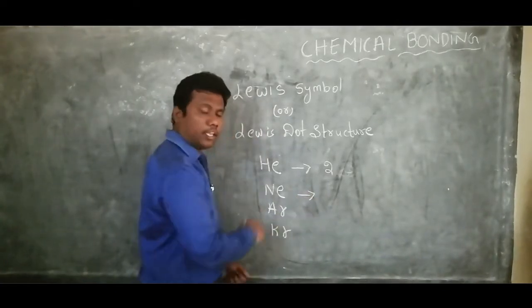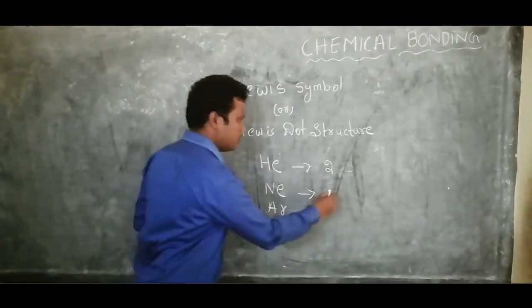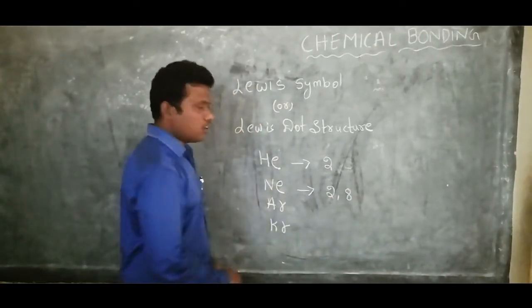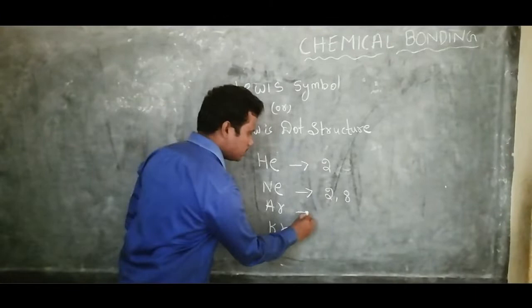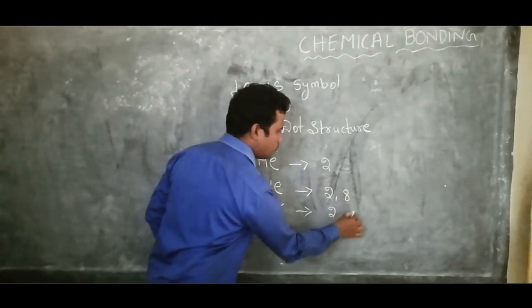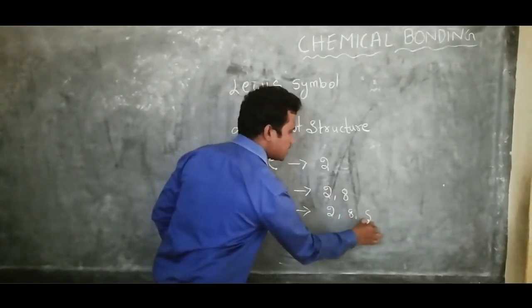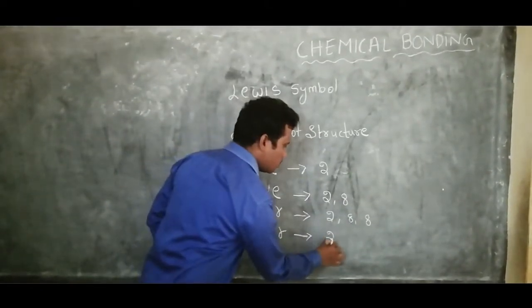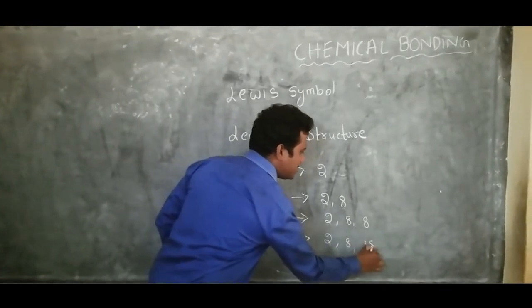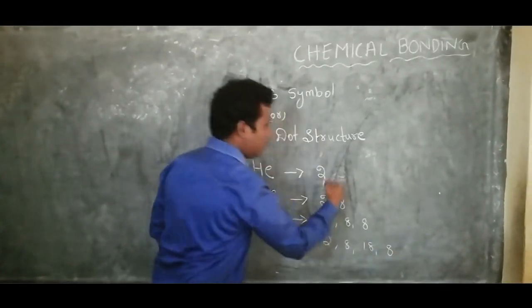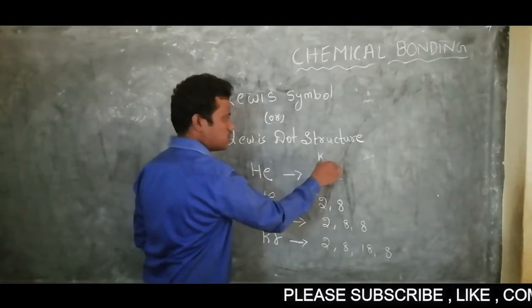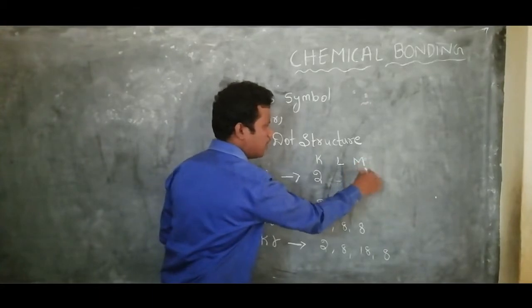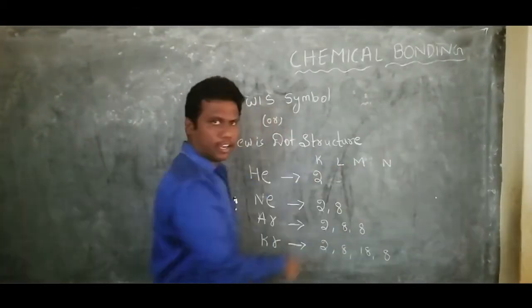If we observe helium, its atomic number is 2, so its electronic configuration is 2. For neon, atomic number is 10, electronic configuration is 2, 8. For argon, atomic number is 18, electronic configuration is 2, 8, 8. For krypton we can observe the first shell K, second shell L, third shell M, and fourth shell N.